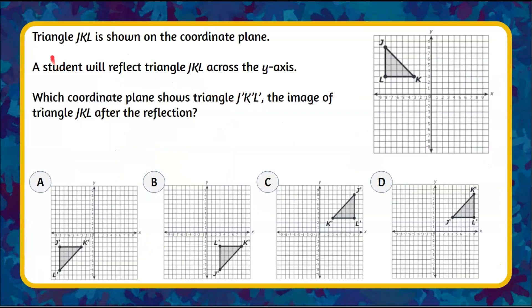Here's our question. We have triangle J-K-L, which is shown on the coordinate plane. A student will reflect triangle J-K-L across the y-axis. We're asked, which coordinate plane shows triangle J-prime, K-prime, L-prime, the image of triangle J-K-L after the reflection? And you're given four coordinate planes to pick from.